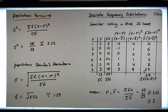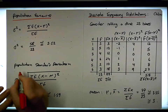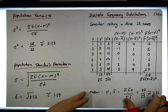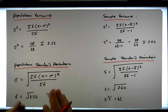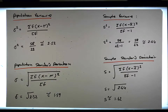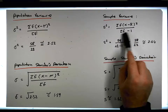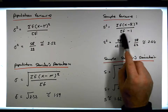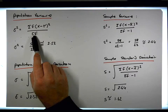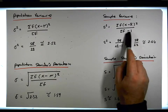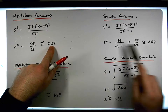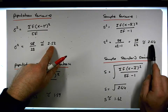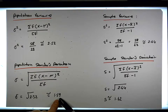That would be the population standard deviation. The only difference between the calculations is the denominator — in the sample case we reduce it by 1, in the population case it's just the total sum of frequencies. So the population variance is 2.52 where the sample variance is 2.64, and the population standard deviation is 1.59 where the sample standard deviation is 1.62.